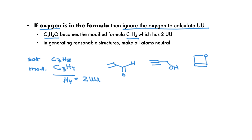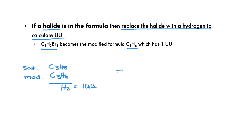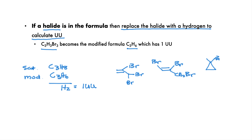If there is a halide in the formula, replace the halide with a hydrogen to calculate units of unsaturation. C3H3Br3 becomes the modified formula C3H6. We subtract this from the fully saturated formula C3H8 and find that there are two missing hydrogens — one unit of unsaturation. One unit of unsaturation means either a double bond or a ring. The first two compounds have double bonds and differ only in where the bromines are located. In the first compound, one bromine is on the double bond; in the second, two bromines are on the double bond. The third compound has a three-membered ring with two bromines on one carbon and one bromine on another.